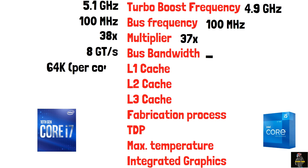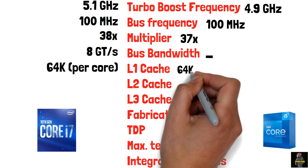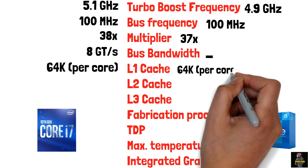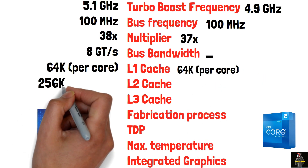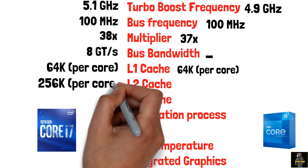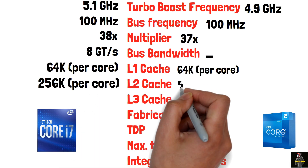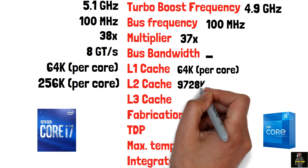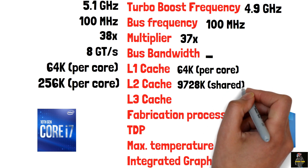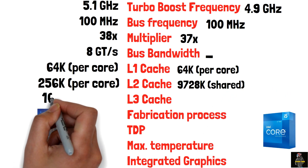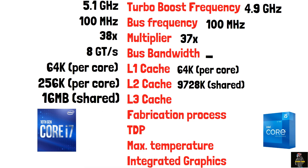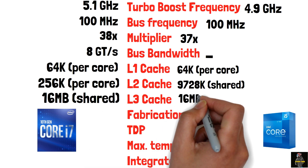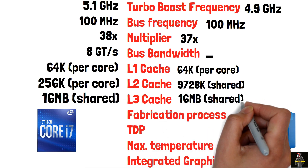L1 cache is 64K per core for both processors. L2 cache is 256K per core for the i5-12600K and 28K shared for the i7-10700K. L3 cache is 16 megabytes shared for both.